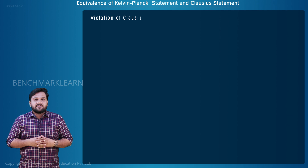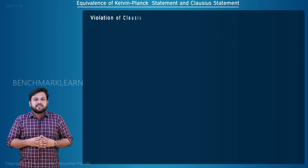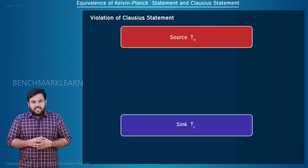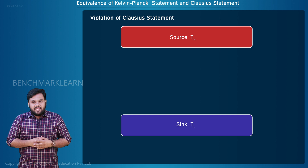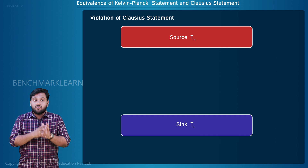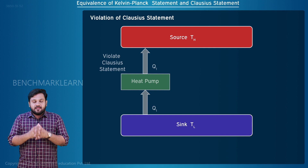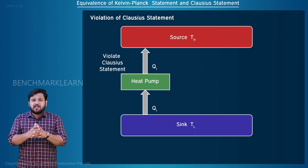This can be illustrated with a system having a hot reservoir with high temperature T1 and a cold reservoir with lower temperature T2. We know that some work is needed to transfer heat energy from the cold to the hot reservoir according to the Clausius Statement. Consider a heat pump that violates the Clausius Statement — that is, it transfers heat energy Q1 from a cold reservoir to a hot reservoir without any work input.